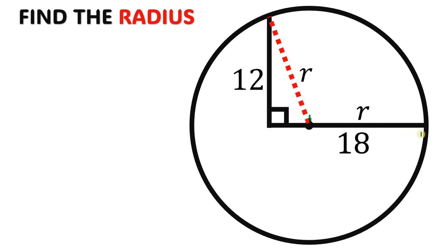And now, if this segment measures 18 units, this segment right over here is simply equivalent to 18 minus r.